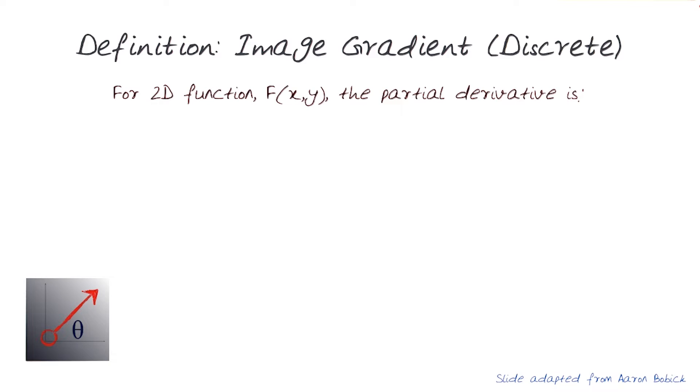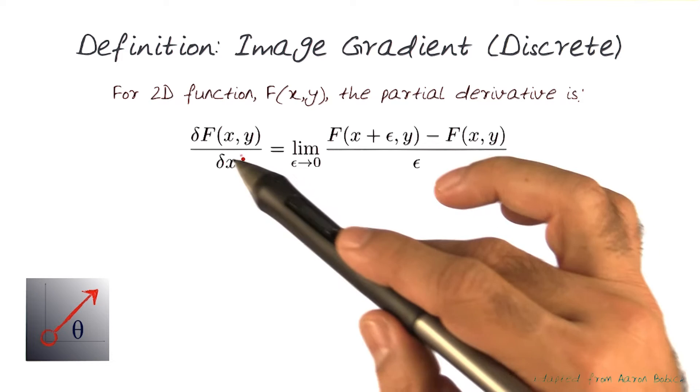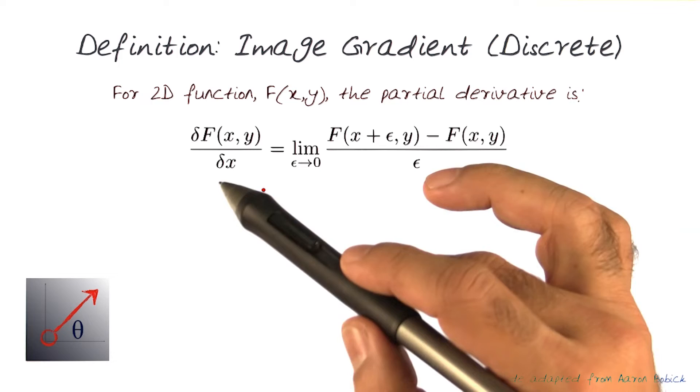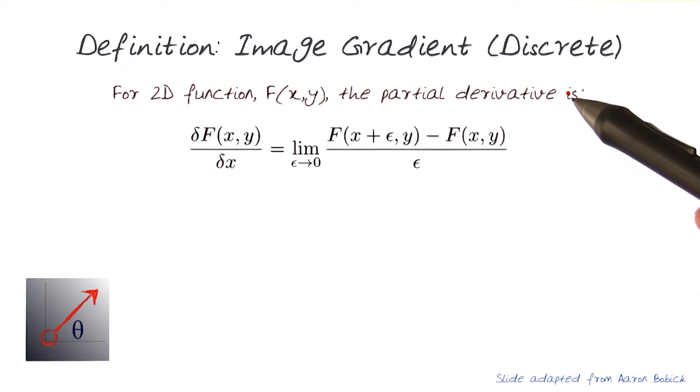I want to use this opportunity to completely define an image gradient in discrete form. For a two-dimensional function f(x,y), the partial derivative would be del f with respect to x. This is in the x direction.